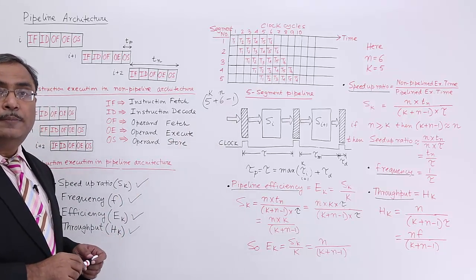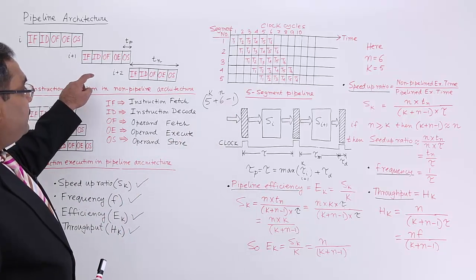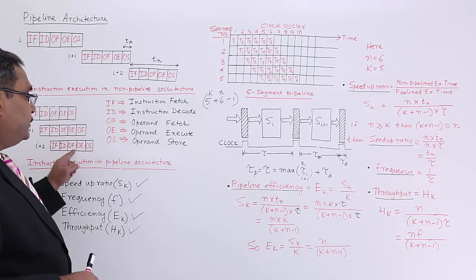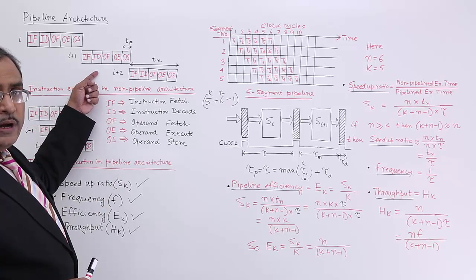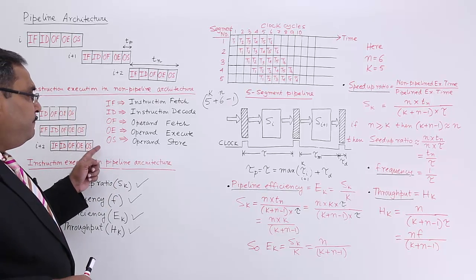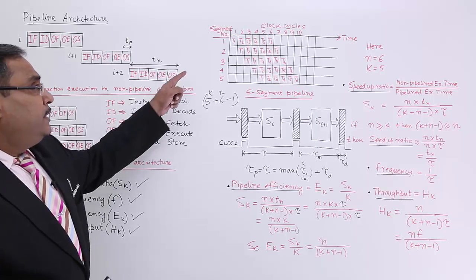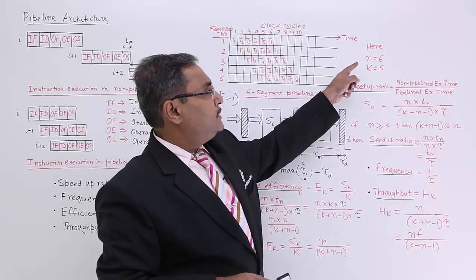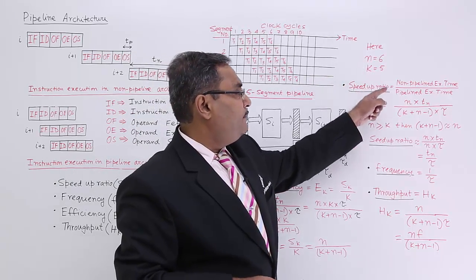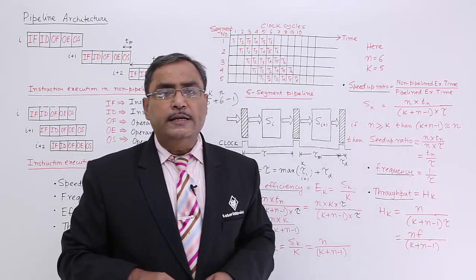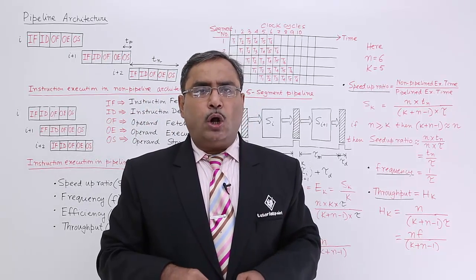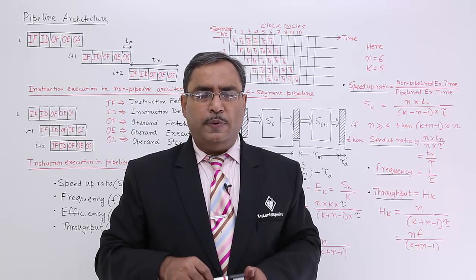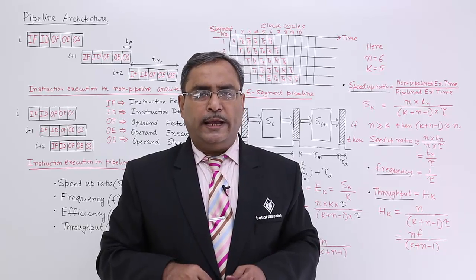Everything is shown on this board: non-pipeline architecture and pipeline architecture execution, instruction-wise interleaved vs phase-wise interleaved, 5 phases, 6 instructions, n = 6, k = 5, and the respective derivations. I shall continue with this pipeline topic in our next videos. Please watch them and get a good concept. Thank you.